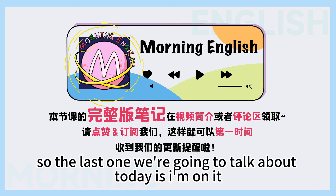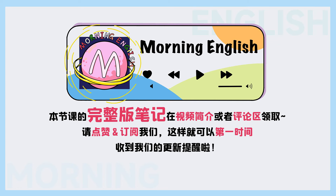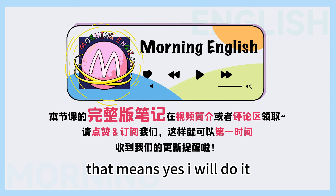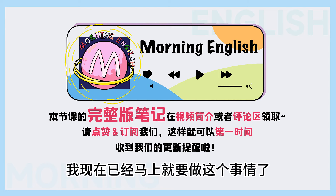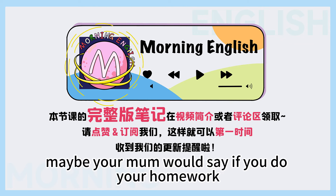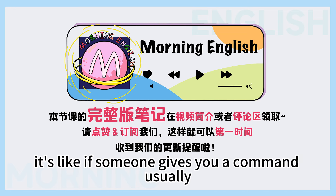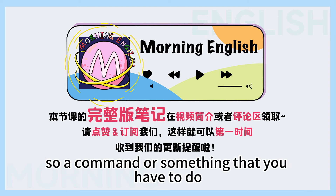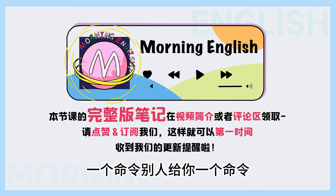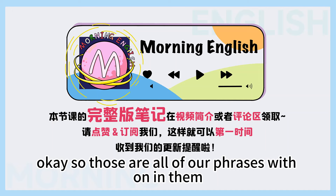So the last one we're going to talk about today is: I'm on it. 最后一个讲的是呢，I'm on it，意思是我已经跟进了。 This basically means: I will do it. So if you ask someone to do something and they say I'm on it, that means yes, I will do it right now. So maybe your mom would say: if you do your homework, then you can go outside and play. And you say: okay, I'm on it. It sounds a little bit annoyed. I'm on it is usually used when someone gives you a command or something that you have to do. 所以有的时候我们用 I'm on it，通常是别人给你一个命令，或者是一些你不得不做的事情的时候，那这个时候你可能会说 I'm on it.